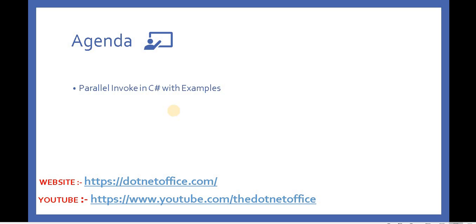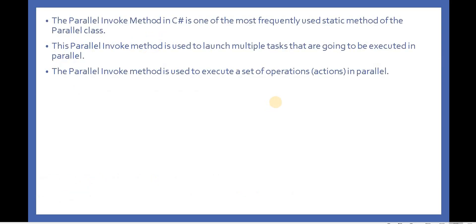Welcome back to the Parallel Programming in C#. In this video we will discuss the Parallel.Invoke method in C#. The Parallel.Invoke method is generally used to call multiple methods in a parallel way. It is one of the most frequently used static methods of the Parallel class, used to launch multiple tasks that are executed in parallel — for example, if your class has multiple methods and you want to execute all of them in parallel.